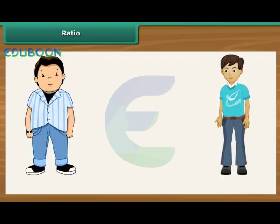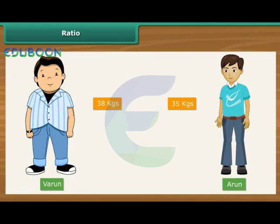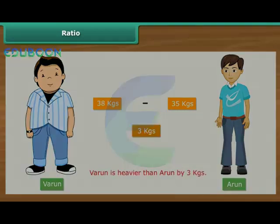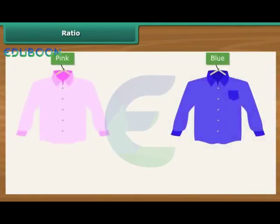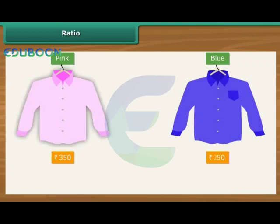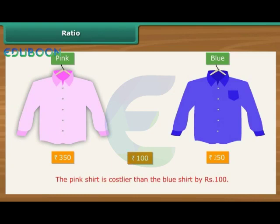We usually compare quantities and values by calculating their difference. For example, suppose the weights of two friends, Varun and Arun, are 38 kgs and 35 kgs respectively. We say that Varun is heavier than Arun by 38 minus 35, that is 3 kgs. Similarly, suppose Ritu buys two shirts, one pink and the other blue, costing Rs. 350 and Rs. 250 respectively. We say that the pink shirt is costlier than the blue one by Rs. 100. Comparison by difference does not make sense when we compare quantities and values that are wide apart.